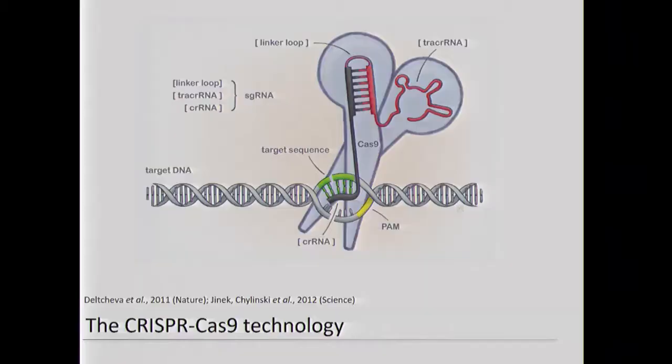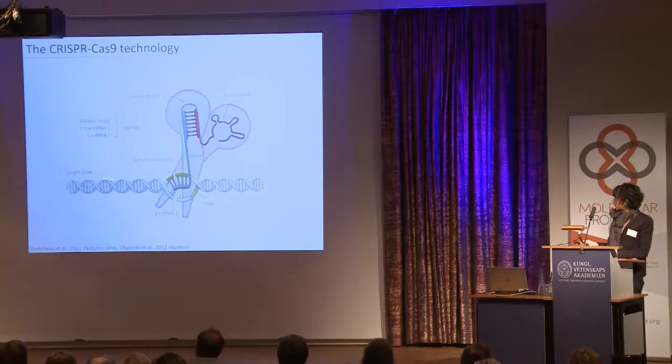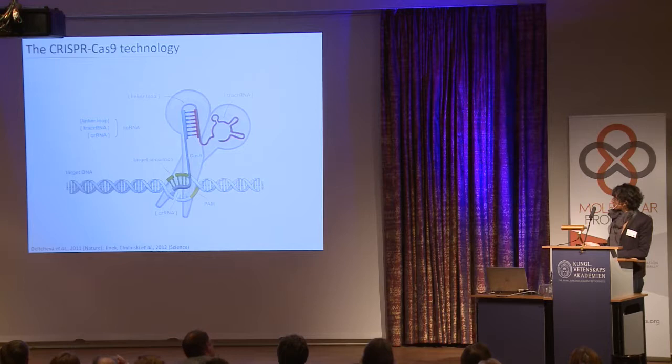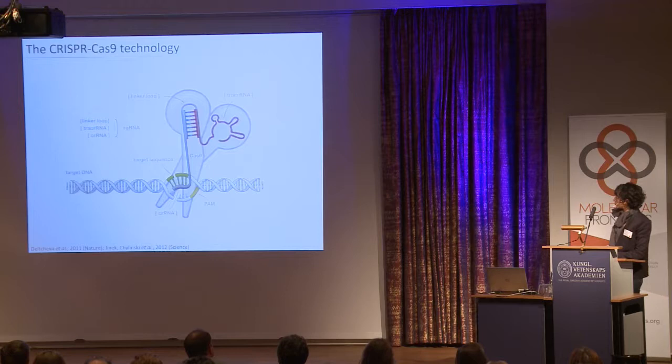I just want to remind you that this is about this enzyme, CRISPR-Cas9, here represented as scissors, that can be programmed with RNA molecules to target sequence-specific DNA. The Cas9 protein works as an enzyme able to cleave DNA in a sequence-specific manner, and the RNA components work as a kind of GPS system allowing to bring the CRISPR-Cas9 system where one would like to have it targeted on the genome of any cell and organism.